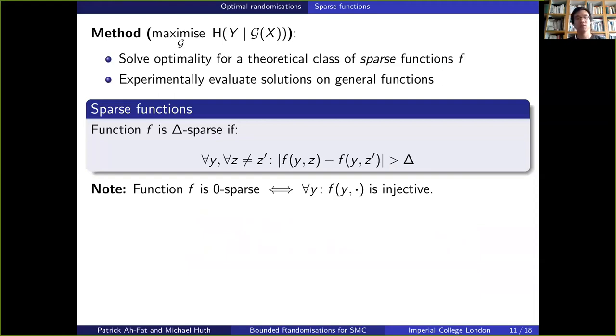So we introduced the definition of a sparse function as follows. A function is delta sparse if given the targeted input y, evaluating f on two different spectators inputs z and z prime yields some outputs separated by a distance of more than delta. For example, a function f is zero sparse if for all input y, the partially evaluated function f of y dot is injective.